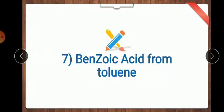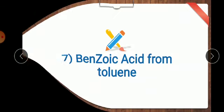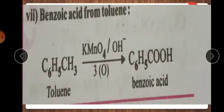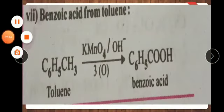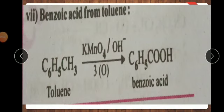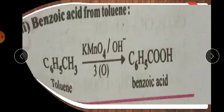Next one. Benzoic acid from toluene. The formula for toluene is C6H5CH3. It is undergoing oxidation. It gives acid, benzoic acid. This is next question.